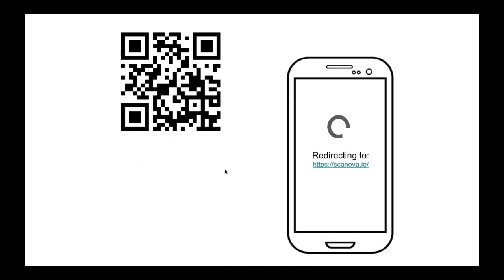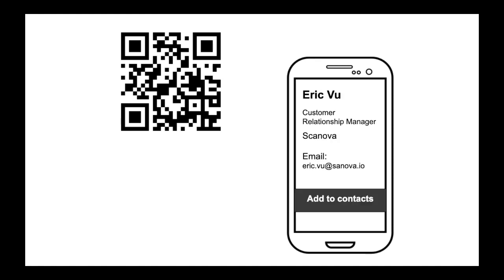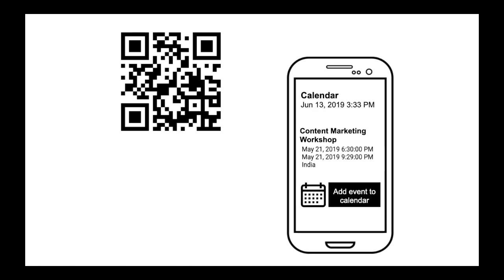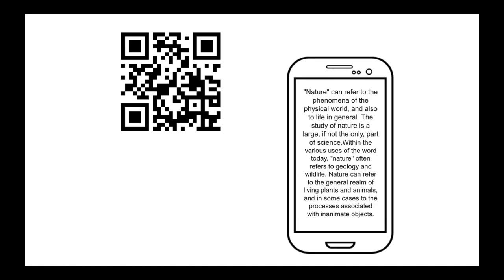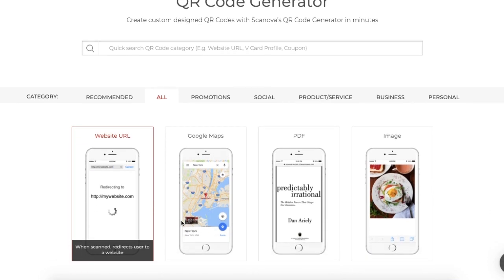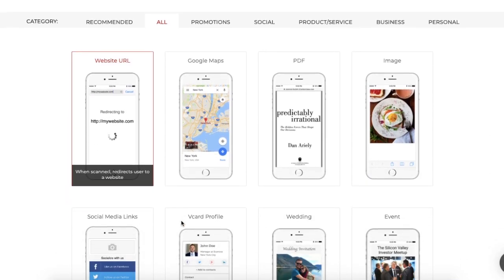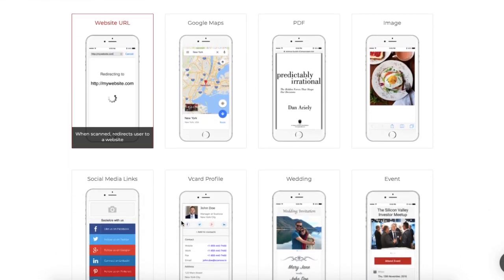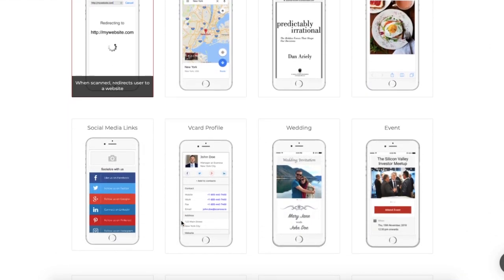You can link a QR code to your website or your Instagram profile, show an image or video, make people save you as a contact or save an event in their calendars. There are 12 different types of QR code that you can create, and in this video we will show you 6 of them. Here we go.